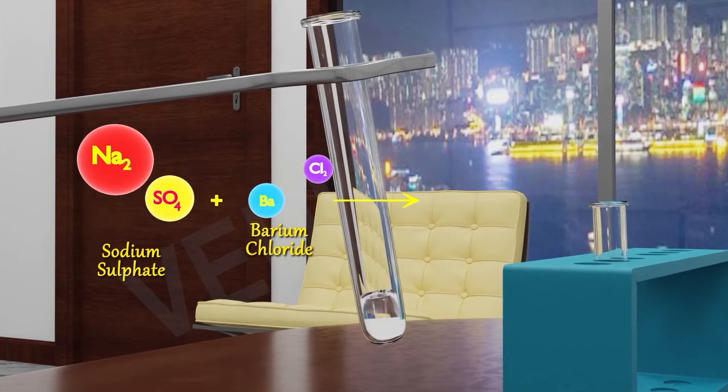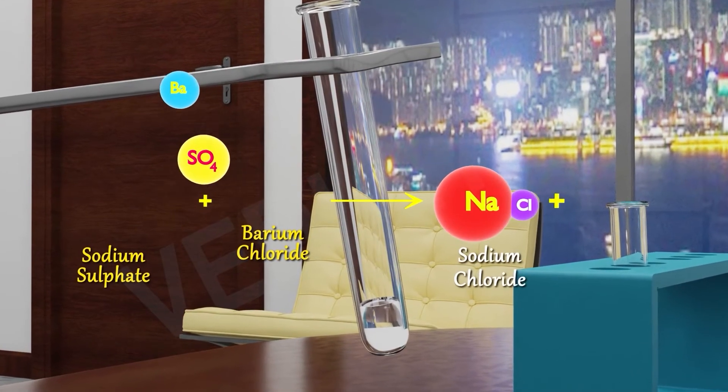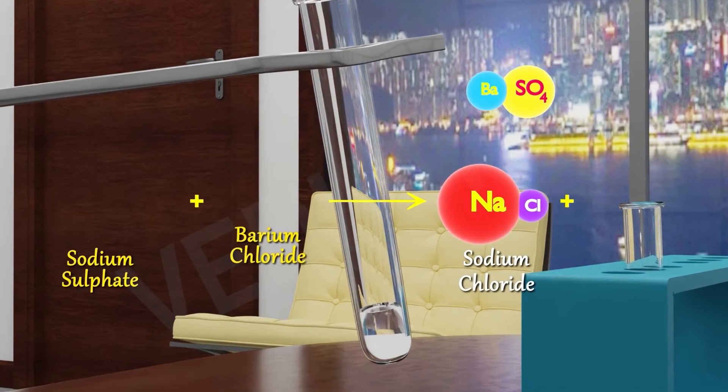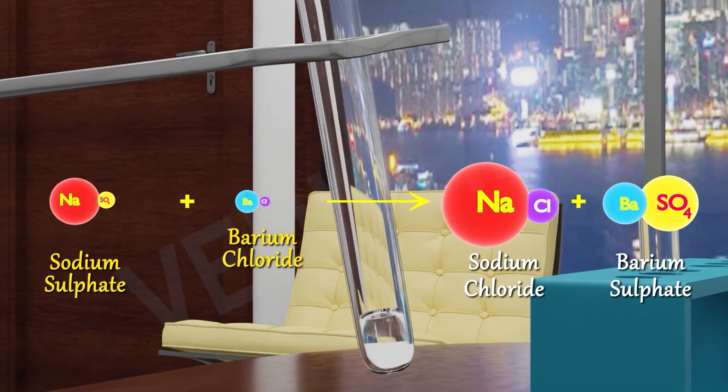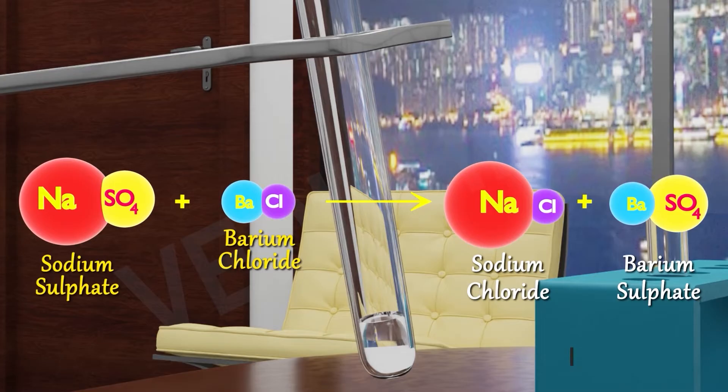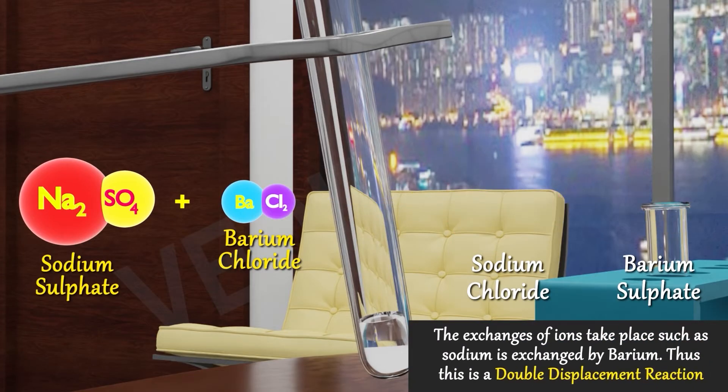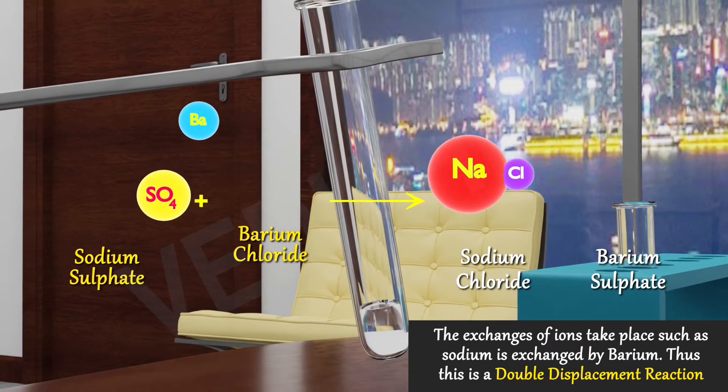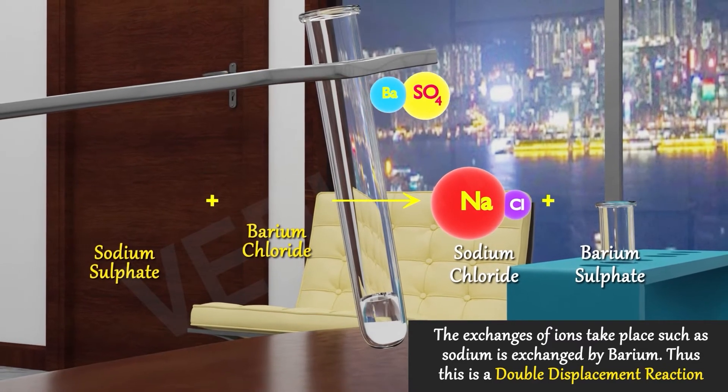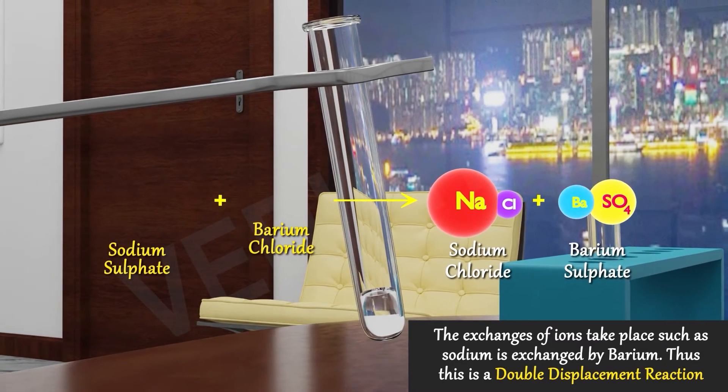The white precipitation of barium sulfate is produced by the reaction of barium and sulfate. In this reaction, the exchange of ions takes place such that sodium is exchanged by barium. Thus, this is a double displacement reaction.